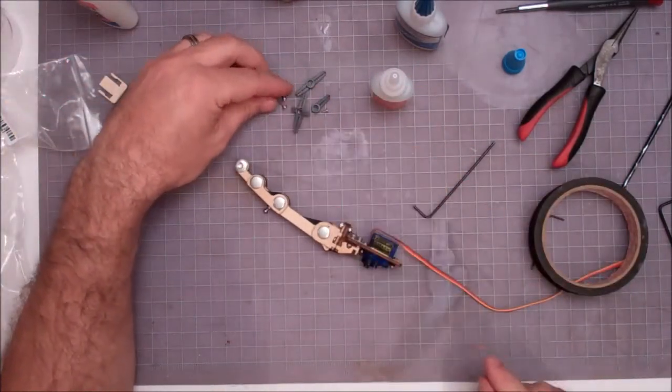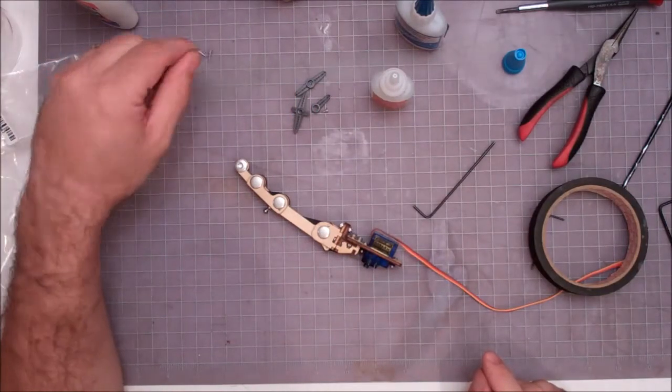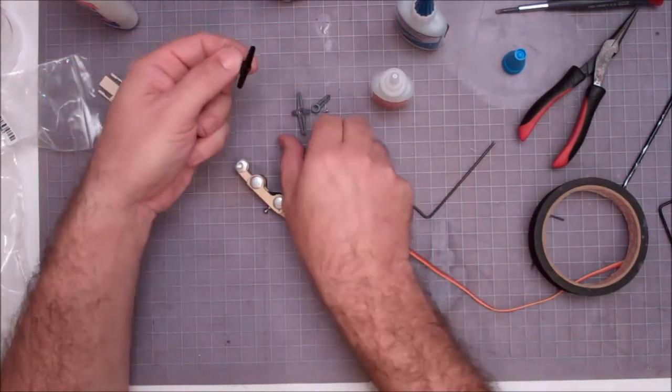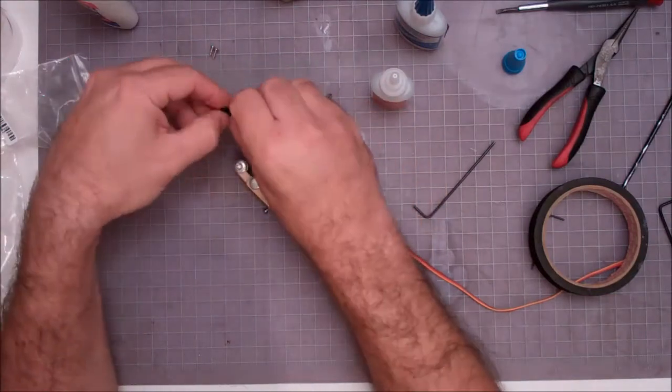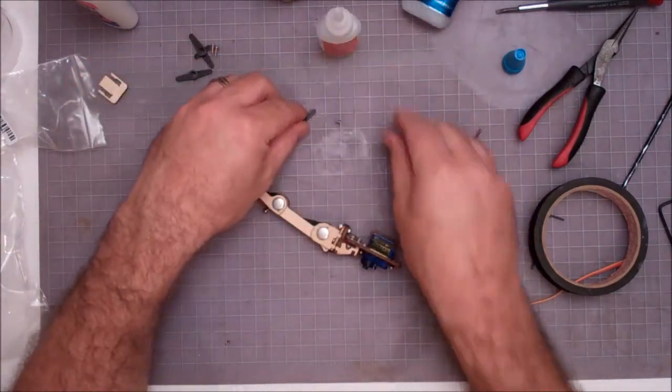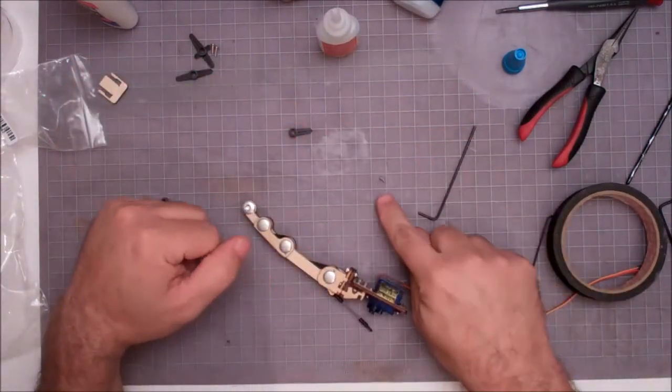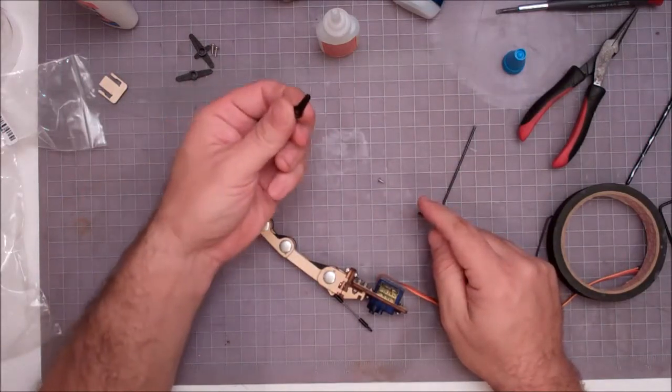Now you'll find two large screws, we don't need those. You'll find two double-ended horns, we're not going to use those. So what we do want is our small screw and our single-ended horn.